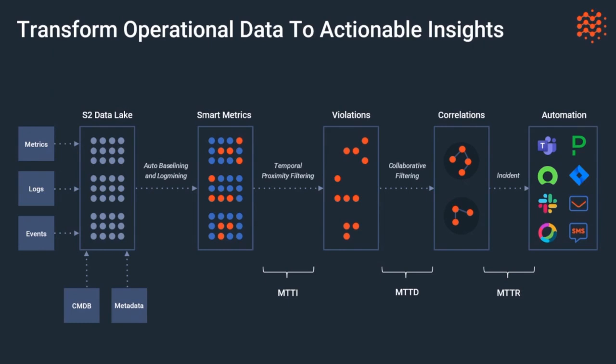Correlations are done with temporal correlation — within a certain time window — as well as contextual correlation, for example if events are related to the same machine, a particular interface on a router, or a particular session. We also use topological correlation, understanding the way the network or application stack is structured. We group all of those different events together and declare: this is an incident.